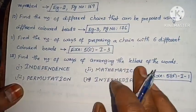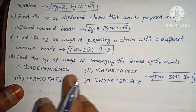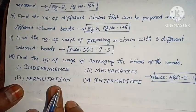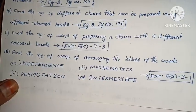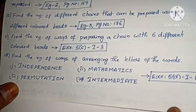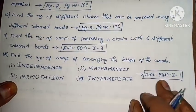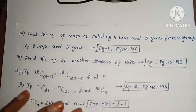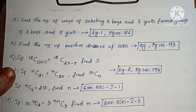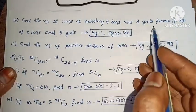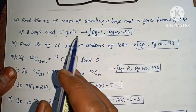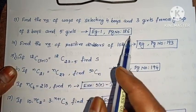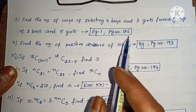Next: find the number of ways of arranging the letters of the words Mathematics, Permutation, and Intermediate (Exercise 5, Roman II, first one). Next: find the number of ways of selecting 4 boys and 3 girls from a group of 8 boys and 5 girls (Example 1, page 186).